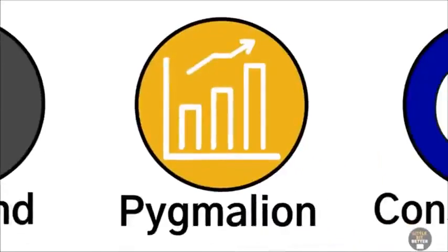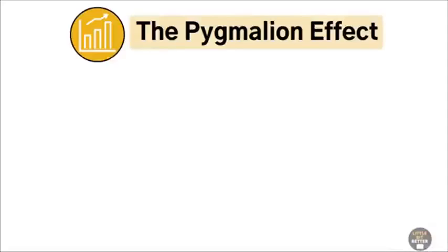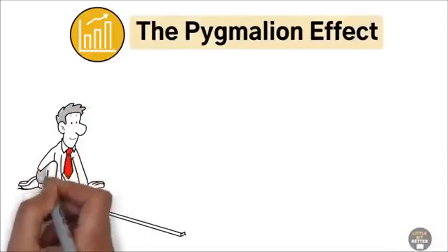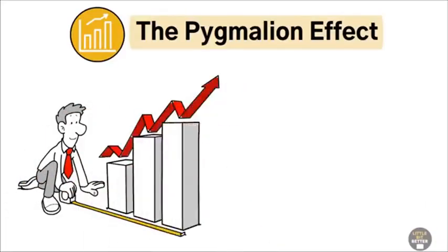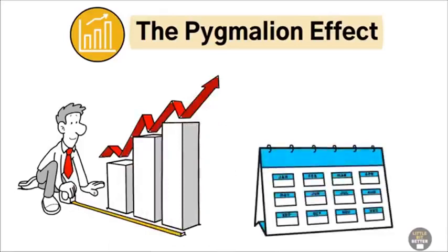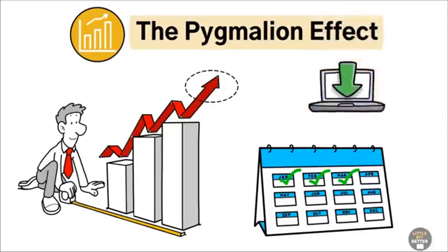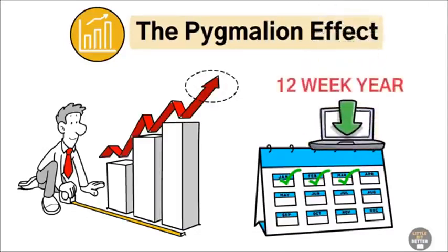The Pygmalion effect. The Pygmalion effect is when a higher expectation from yourself leads to an increase in performance. For example, if you aim to achieve your one-year goal in three months, your performance will significantly increase. There's a book on this channel titled 12-Week Year, which explains how to do that.